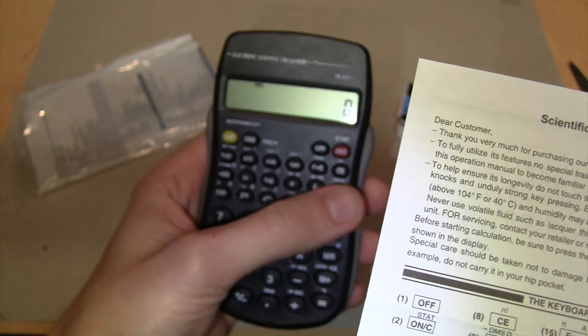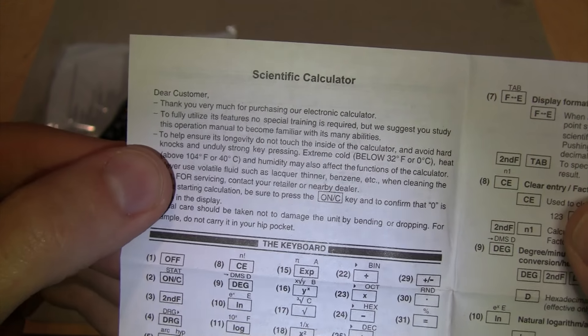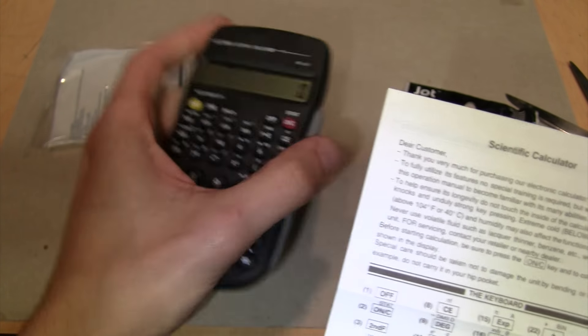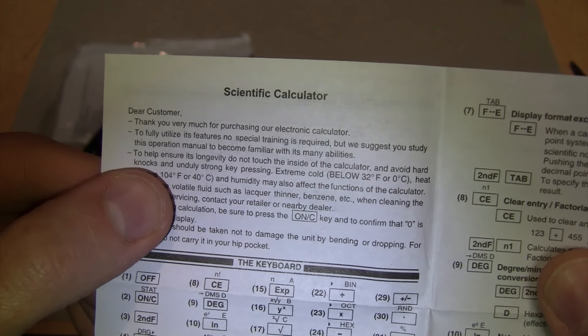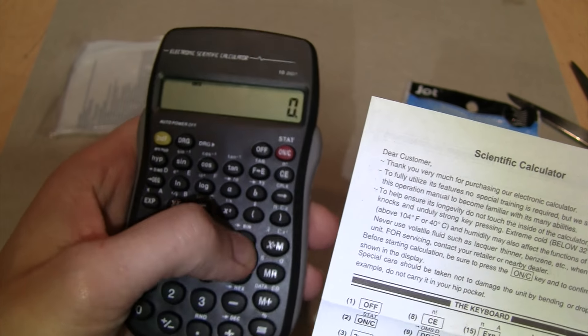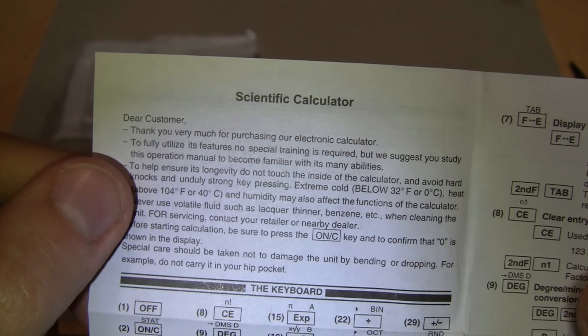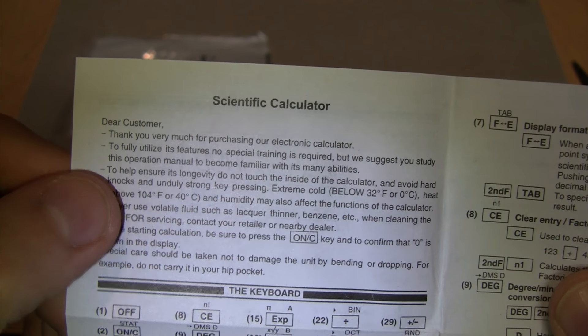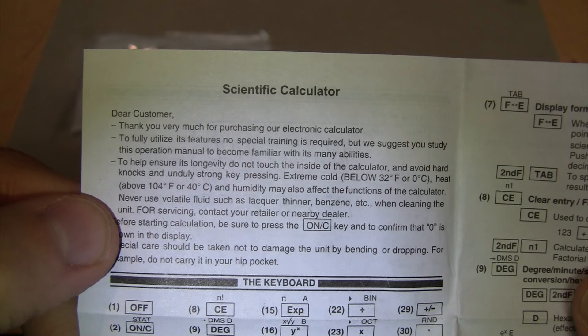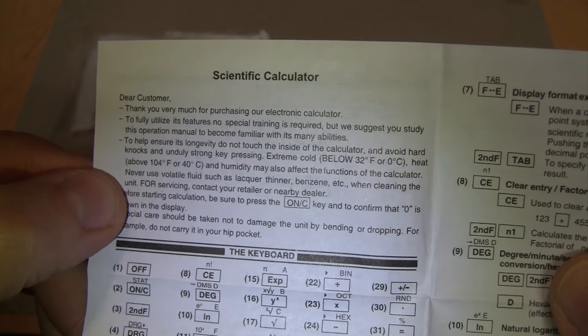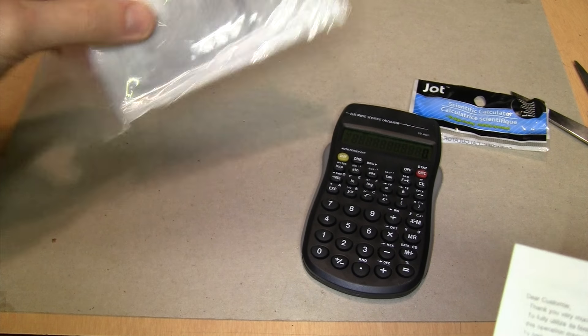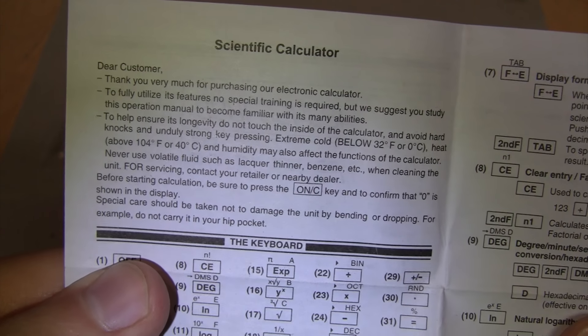Oh, I forgot to take a look at the owner's pamphlet which it comes with. It says thank you very much for purchasing our electronic calculator. To help ensure its longevity, do not touch the inside of the calculator. Okay, I guess you can take it apart just as long as you don't touch anything inside it. And avoid hard knocks, so this is not a calculator for a hard knock life, and unduly strong key pressing, so light touch only. You can't use it below freezing, okay I'll remember that, don't take it on your ski trip.